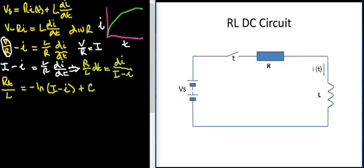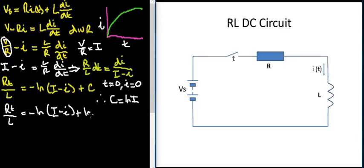So we're now at the point where we can say at the moment that the switch is closed, t equals zero and at that point i equals zero. Under those conditions, C therefore equals ln big I. Now I can plug that ln I in for C, so I now have RT over L equals minus ln of big I minus little i plus ln big I.